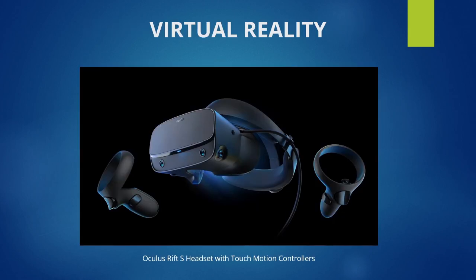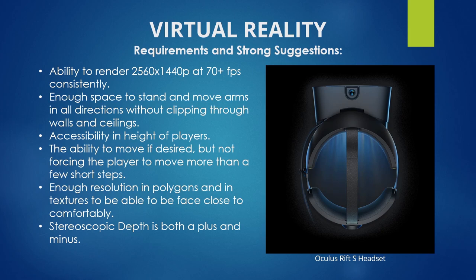For virtual reality, I am using the Oculus Rift S headset and motion controllers. This is currently the flagship headset for Oculus, released in May 2019 and still considered high-end. The Oculus Rift S runs a resolution of 2560x1440p at a maximum frame rate of 80 frames per second. It is recommended to keep a stable frame rate above 70 fps or users may experience motion sickness. You also want enough space to stand and move arms in all directions, considering people of different heights, sizes, and arm spans, plus enough resolution in polygons and pixels to hold an object up to your face and still look good far away.